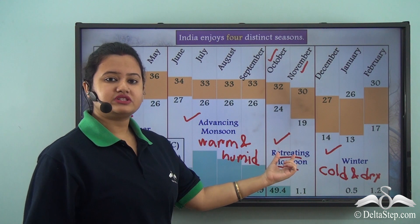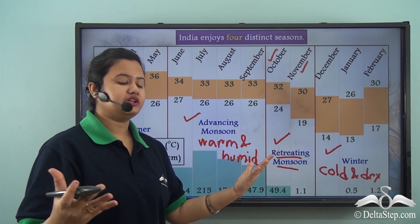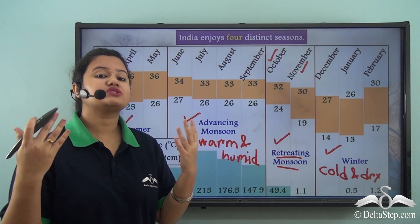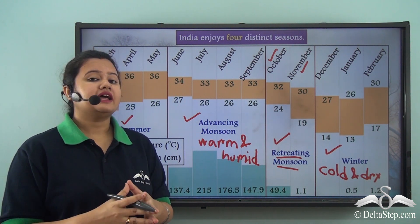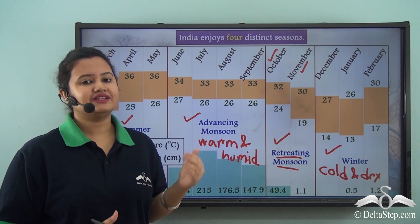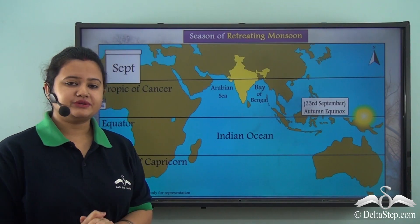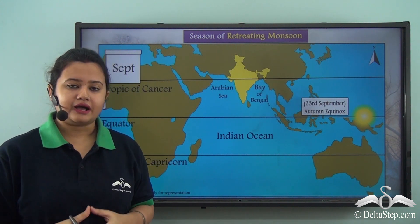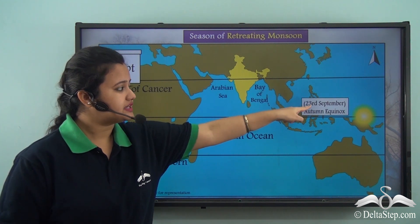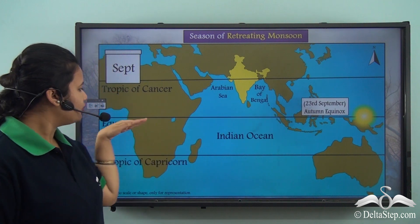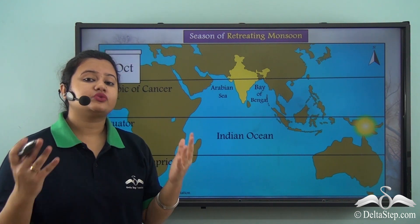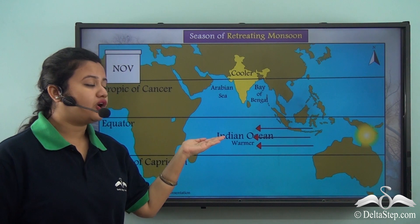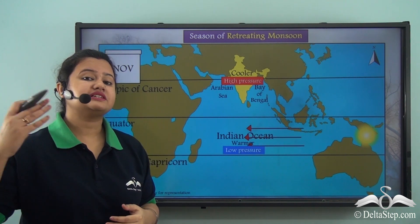Retreating monsoon season is a transition period from warm and humid to cold and dry season, and is also referred to as autumn season. By end of September the monsoon winds become less powerful and the climate gradually dries up. On 23rd September — the autumn equinox — the Sun is overhead the equator, after which it gradually starts to move south towards the Tropic of Capricorn.